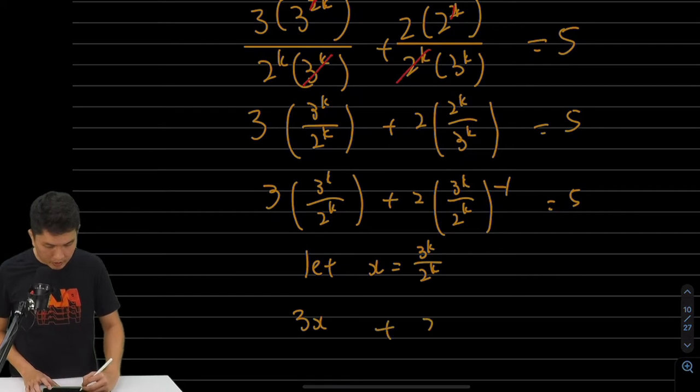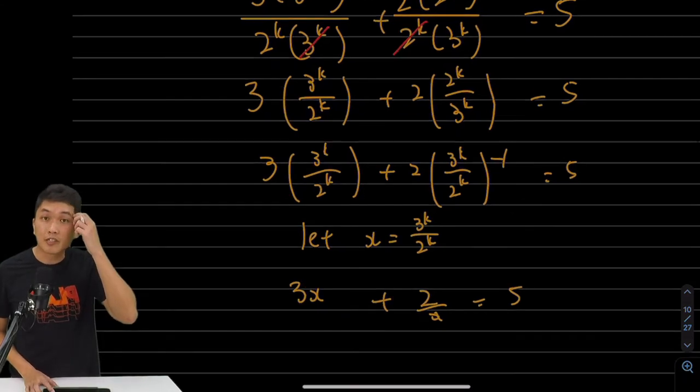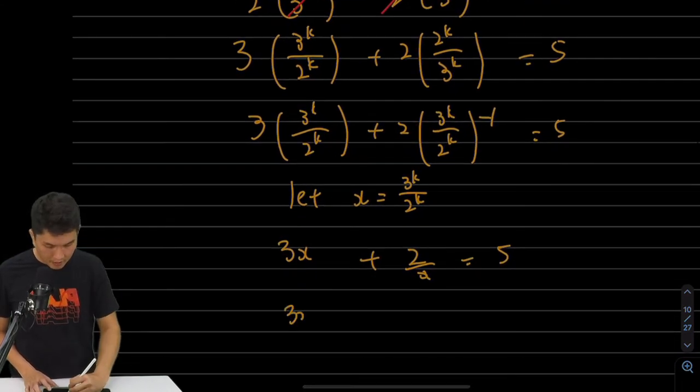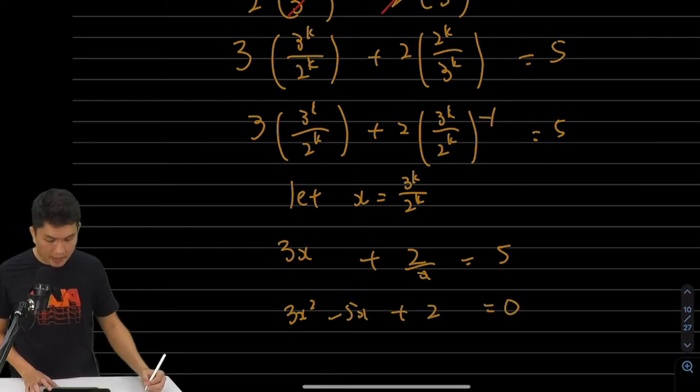So I get 3x plus 2 over x equals to 5. And from here, you can see the quadratic equation. 3x squared minus 5x plus 2, multiplying throughout by x, moving the 5 over. This is what I get.